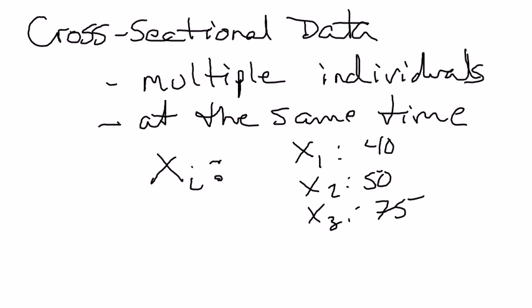Or it could be firms — you might be talking about profit of individual firms. If X is profits, the first one might be GE, the second Apple, the third IBM, etc. The important thing is cross-sectional data is just multiple individuals at a single point in time. Those individuals could be people, states, countries, firms, or any sort of group.